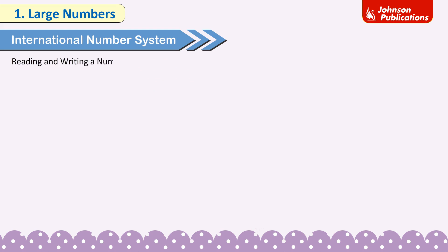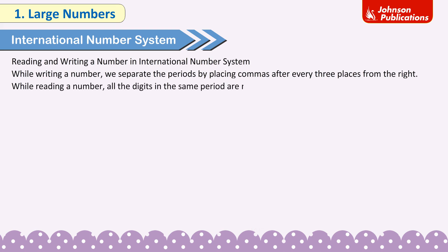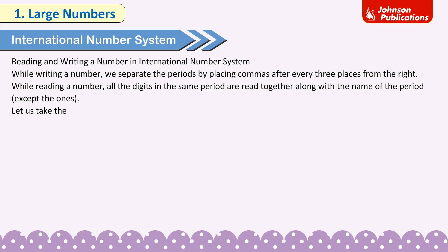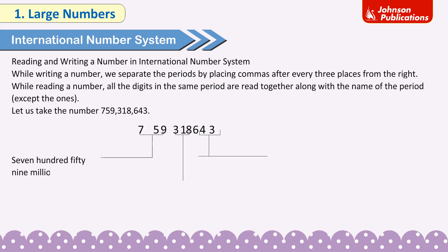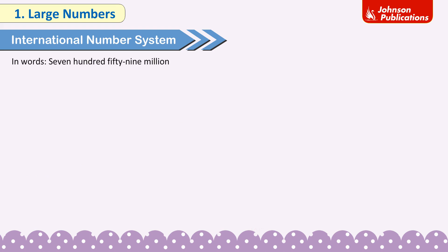Reading and writing a number in the international number system: While writing a number, we separate the periods by placing commas after every three places from the right. While reading, all the digits in the same period are read together along with the name of the period, except the ones. For example, the number 759,308,643 in figures is 759,318,643.